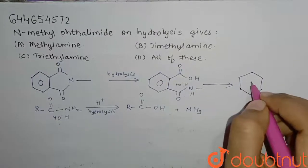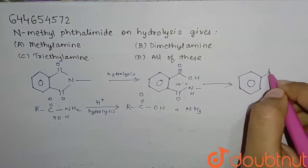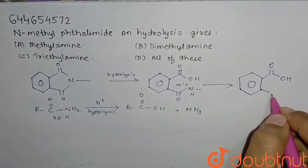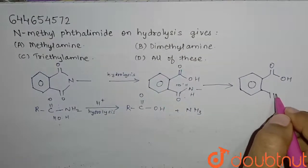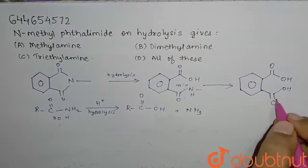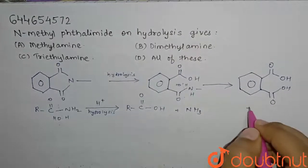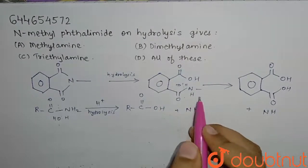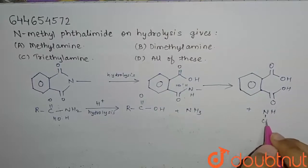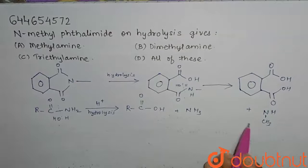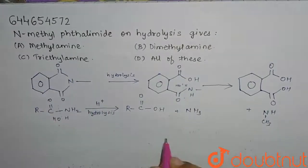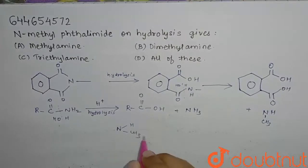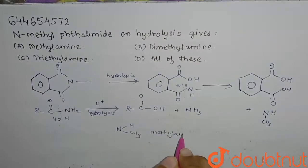So we get benzene with C double bond O, OH — and here C double bond O, OH. And also we get NH attached with CH3. Here we have the CH3 group attached. So this means that we get methylamine on hydrolysis of N-methylthylamide. In simple form, this is NH and CH3 — this is methylamine.